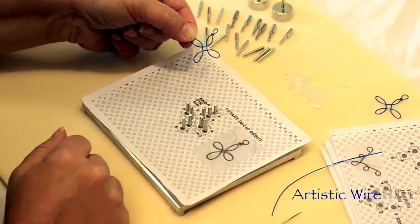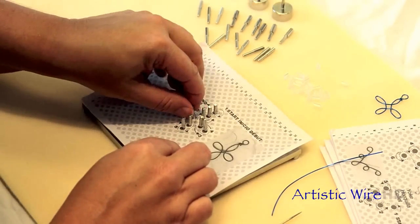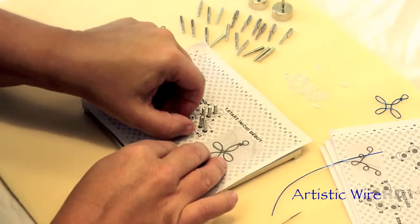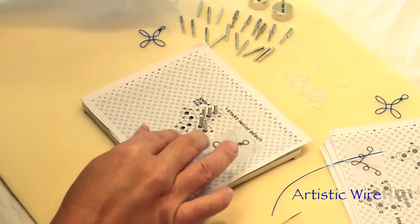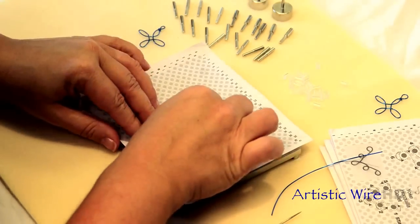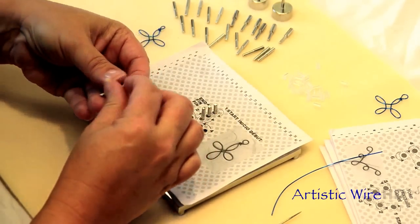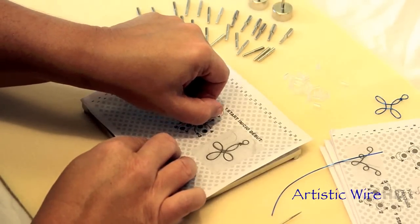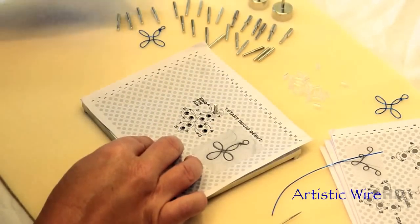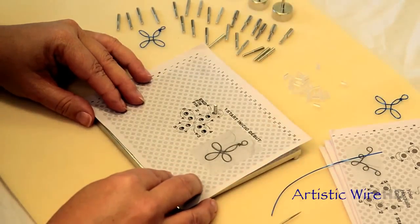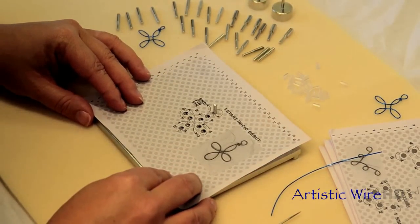Now when you're all finished, all you have to do is take your pegs out and remove your pattern. And remember to store these because you're going to use these patterns over and over again. I hope you enjoyed learning how to work with your Artistic Wire Deluxe Jig Kit.